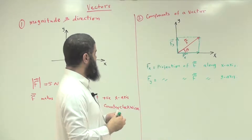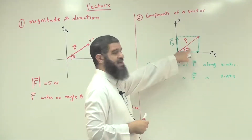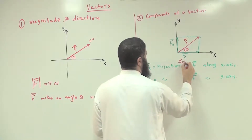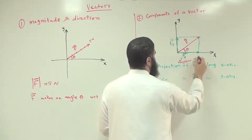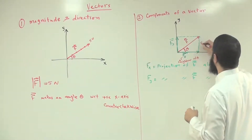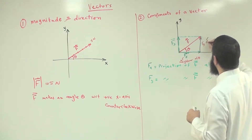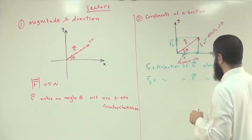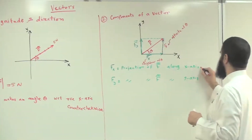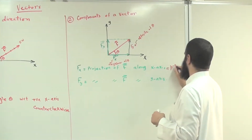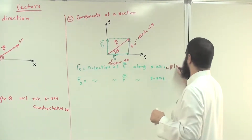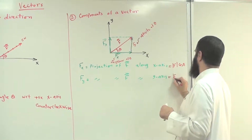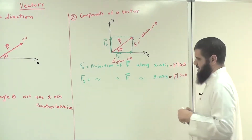From trigonometry, Fx is the adjacent side to angle theta, so Fx equals the magnitude of F multiplied by cosine theta. Fy is the opposite side to angle theta, so Fy equals the magnitude of F multiplied by sine theta.